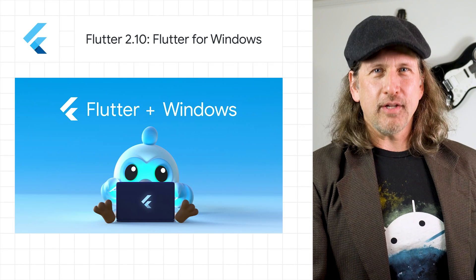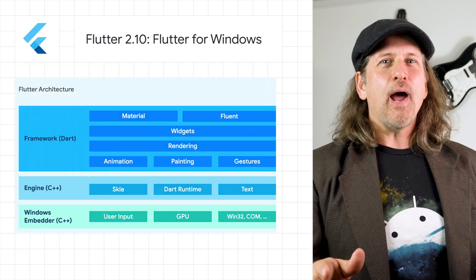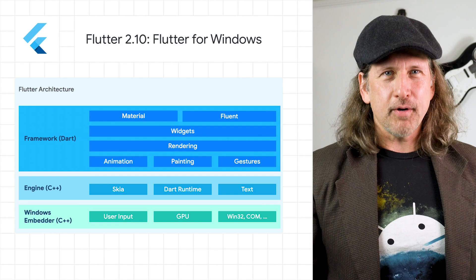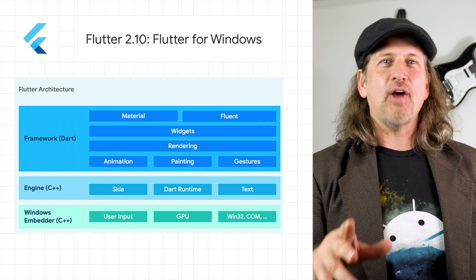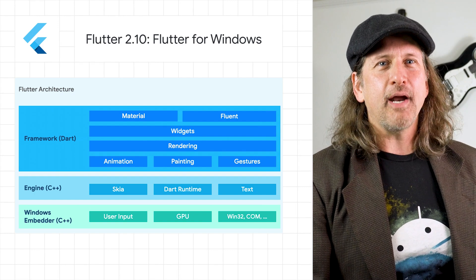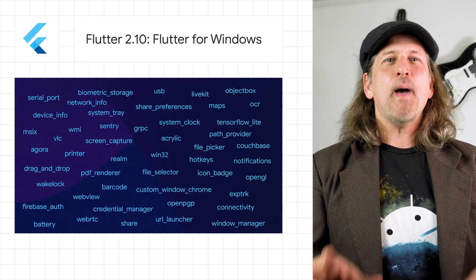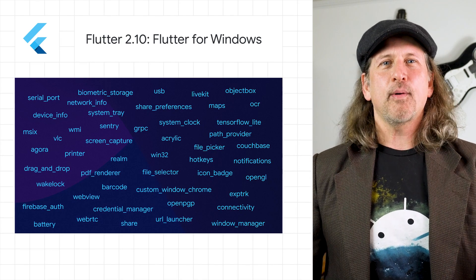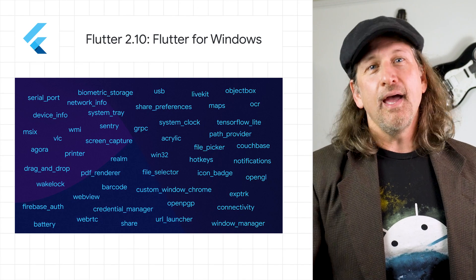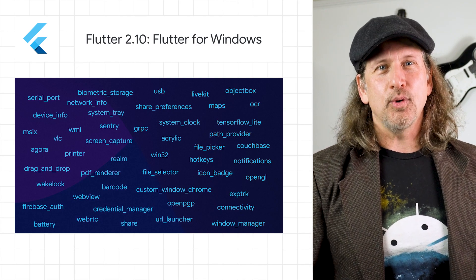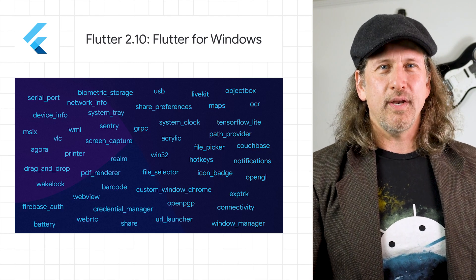Flutter released 2.10, which includes production support for Windows as an app target. Your app can not only use every part of the Flutter framework, it can also talk to the Win32, COM, and Windows Runtime APIs, either directly through Dart C Interop Layer or using a platform plugin written in C++. You can use packages like Fluent UI and Flutter Acrylic to create an app that expresses the Microsoft Fluent design system beautifully. And using the MSIX tool, you can wrap your app in an installer that can be uploaded to the Microsoft Store on Windows.